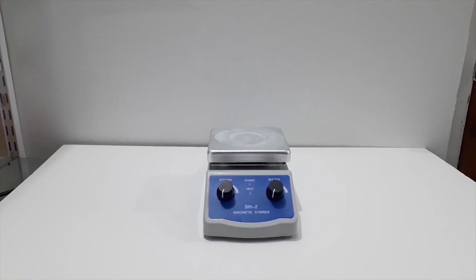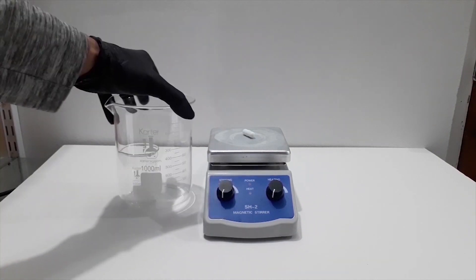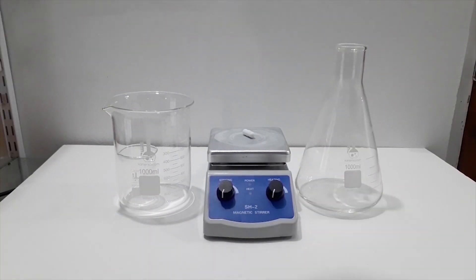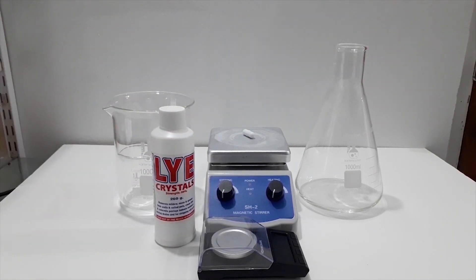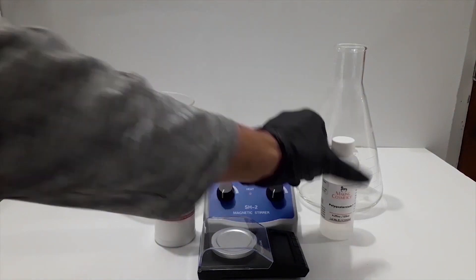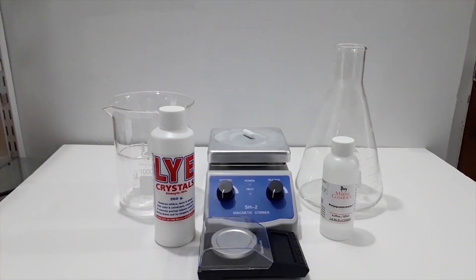While that's curing, we can work on preparing the dechlorination solution. For this, what we need is a hot plate stirrer, beakers, an Erlenmeyer flask, and a digital scale. The reagents used in this dechlorination solution are sodium hydroxide and a quaternary ammonium salt to act as a phase transfer catalyst.